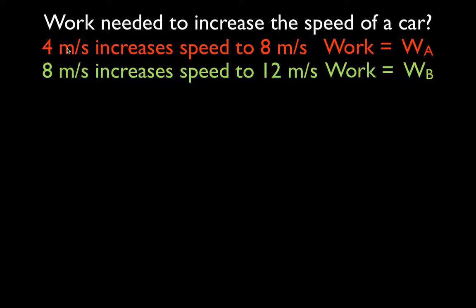We have the same car and we're going to look at it in two different situations. In situation A, we're going to take a car and increase its speed from 4 to 8 meters per second — we'll call that work A. Then in situation B, we increase its speed from 8 to 12 meters per second — we'll call that work B.